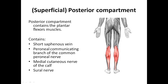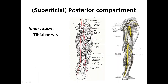This is a plantar flexion compartment. In this compartment we see the structures: the short saphenous vein, a peroneal communicative branch, a peroneal nerve, and a medial cutaneous nerve. These are all the structures in our superficial posterior compartment.